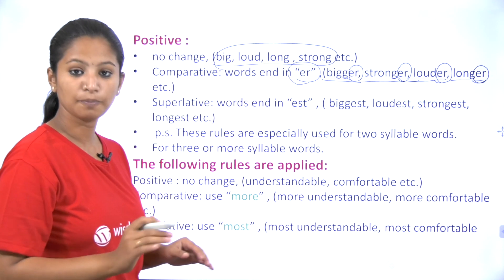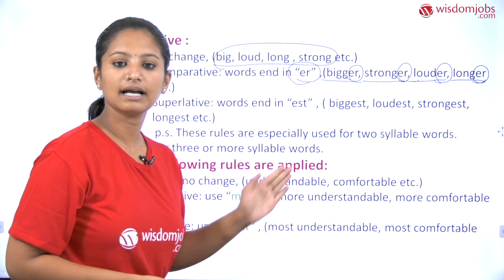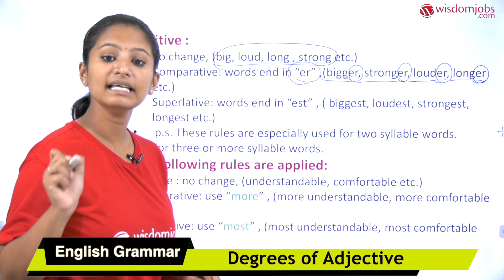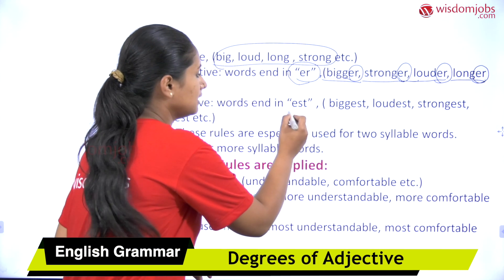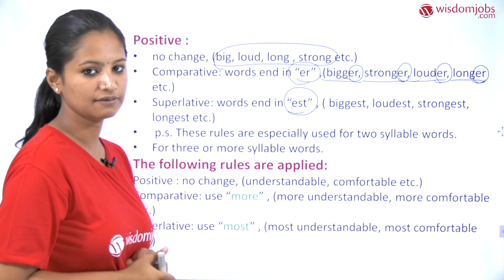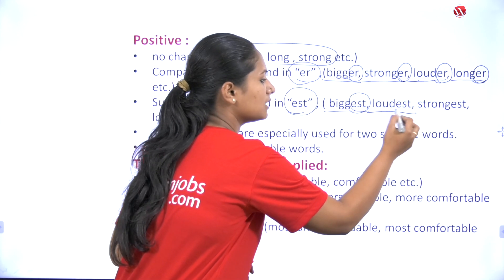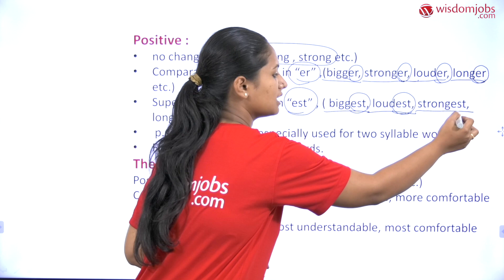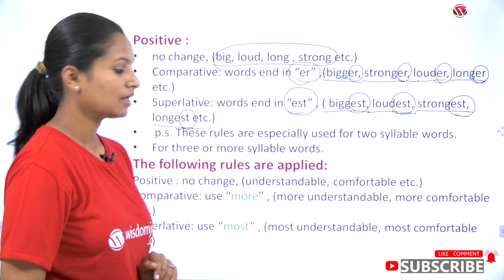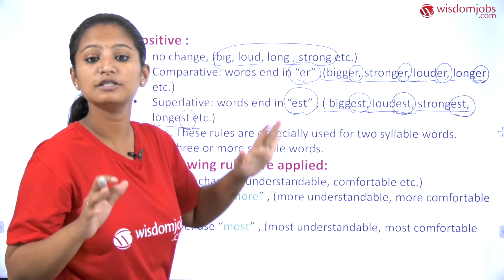Now let us see the superlative degree. In superlative degree, words end in '-est'. For example: biggest, where '-est' is added; loudest, where '-est' is added; strongest, where '-est' is added; and longest, where '-est' is added.